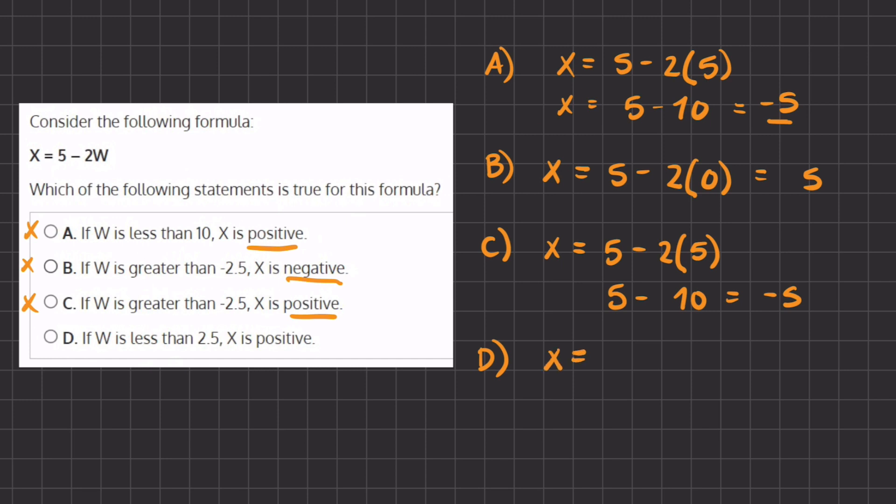X equals 5 minus 2 times a number that is less than 2.5. So let's pick the number 0, and we get 5. So X is a positive number, and D is our correct answer.